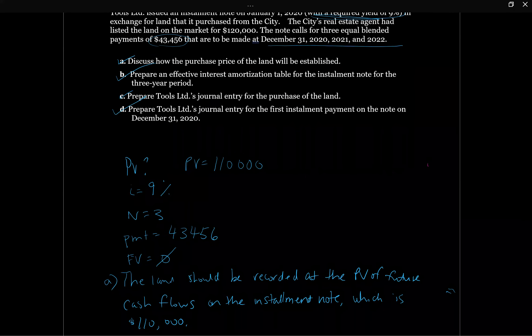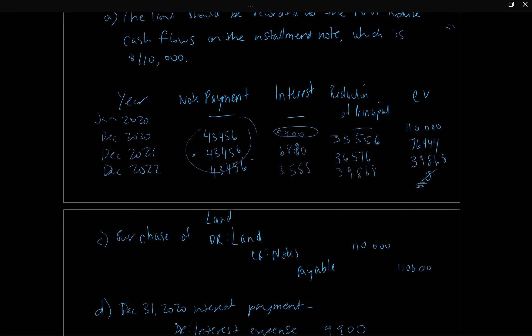To summarize: an installment note is where the principal reduces each period, so at the end of the note you'll have nothing on the statement of financial position — you don't repay the face value at maturity. The effective interest amortization table looks slightly different: rather than amortizing a premium or discount, we're breaking out the blended payment into its interest and principal components. We recognize the interest portion as interest expense and reduce the principal on the statement of financial position so that at maturity the note is at zero.